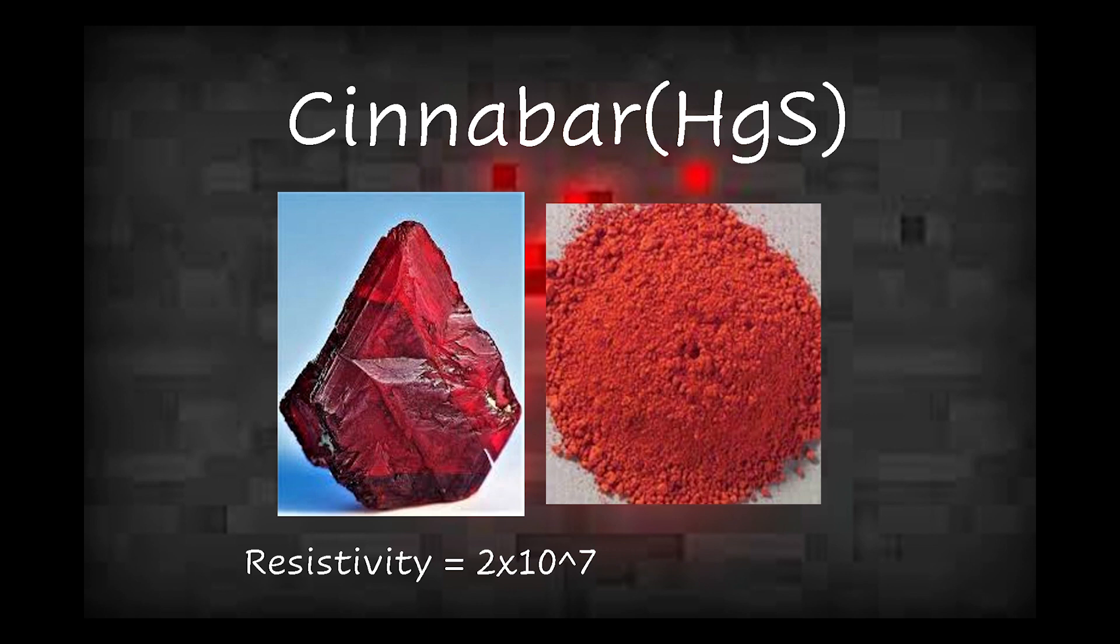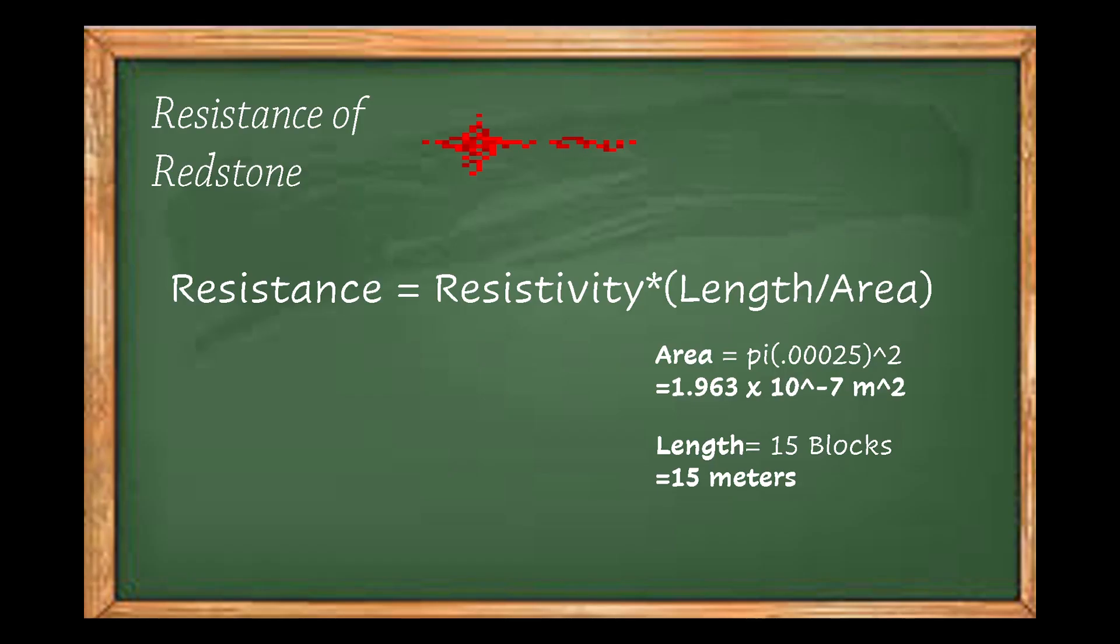So to reiterate, we have a 100% voltage drop over a 15 meter long wire, with electrons passing in an area of 1.96 times 10 to the negative 7 meters squared, and material with a resistivity of 2 times 10 to the 7th power.